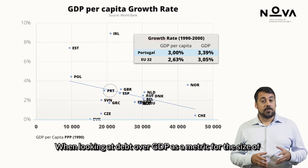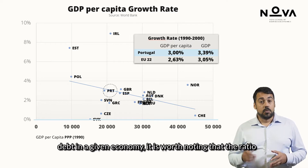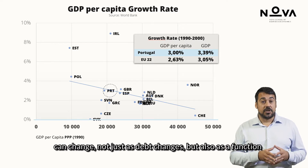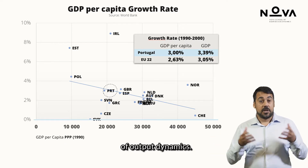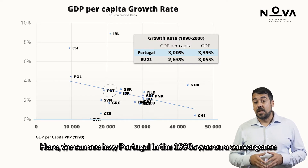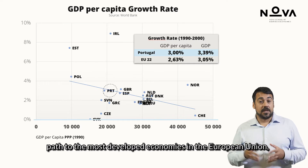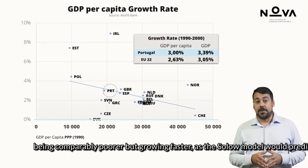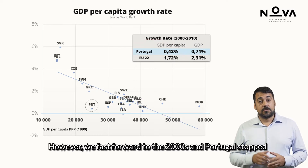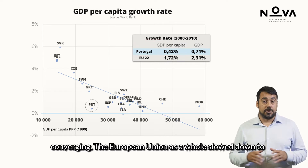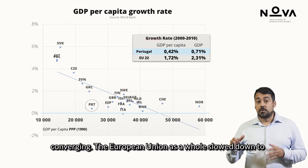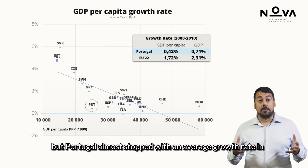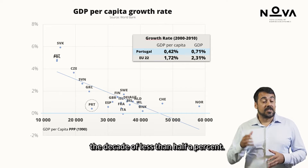When looking at debt over GDP as a metric for the size of debt in a given economy, it is worth noting that the ratio can change not just as debt changes but also as a function of output dynamics. Portugal in the 1990s was on a convergence path to the most developed economies in the European Union, being comparably poorer but growing faster, as the Solow model would predict. However, in the 2000s Portugal stopped converging — the EU as a whole slowed to 1.72% real GDP growth per capita, but Portugal almost stopped with an average growth rate in the decade of less than half a percent.